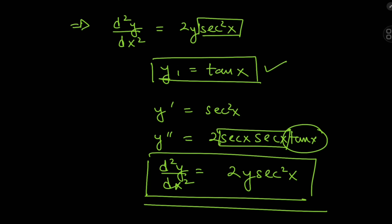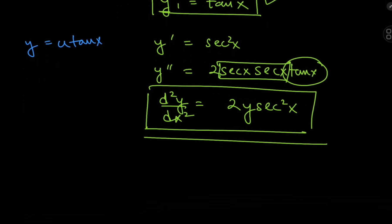Now that we have a particular solution, we can look for a general solution using the method of undetermined coefficients. Let's say the general solution y is the particular solution tan(x) times another function u(x). We need to differentiate this: y' = u'·tan(x) + u·sec²(x).